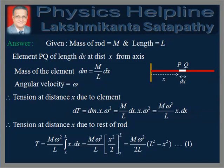Therefore, tension at a distance x due to the rest of the rod is obtained by integrating dT between limits x to L, which gives T equals M omega square by 2L into L square minus x square.